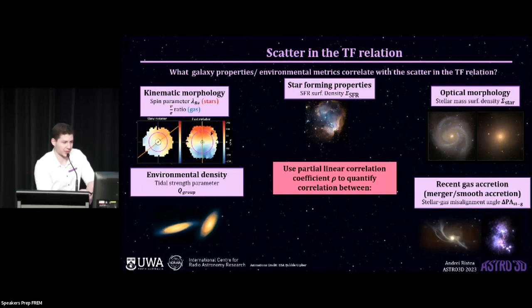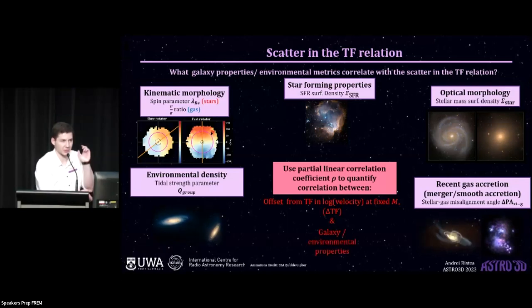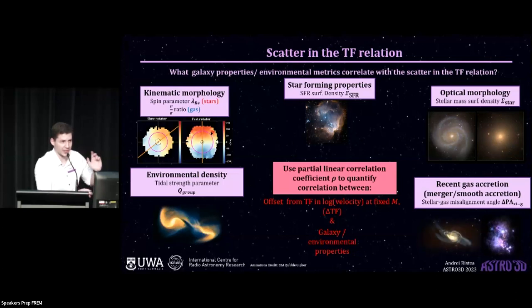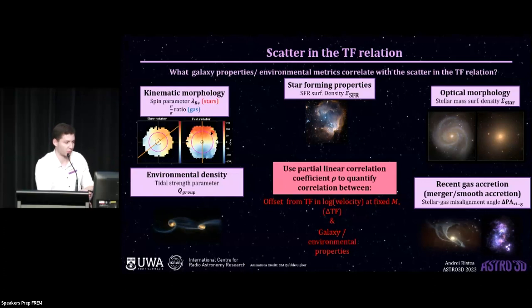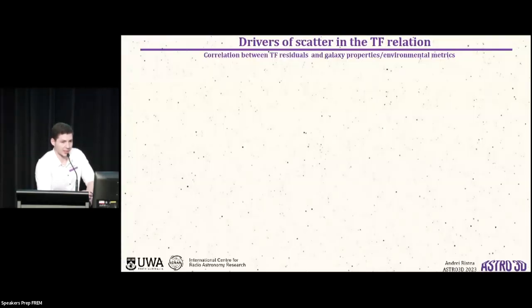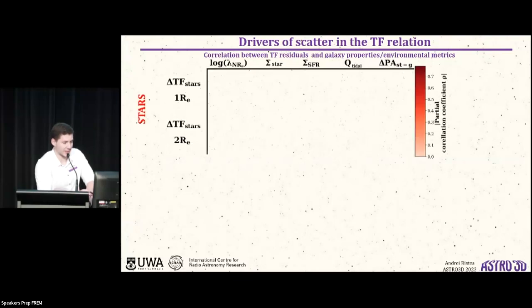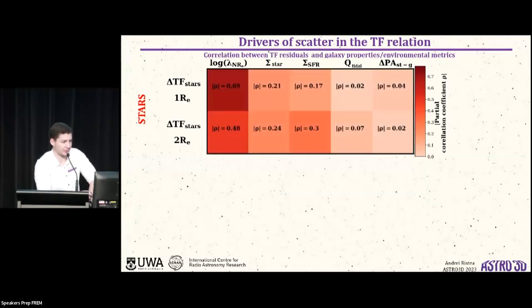Now, for that, I use a partial linear correlation coefficient between the Tully-Fisher residuals in the velocity direction and all of these parameters that I've mentioned. And I should say that this correlation coefficient is taking into account covariances with stellar mass and with all the other parameters when one single correlation is considered. So now we can go ahead and finally see the results of this. And I'll start with the results for stars. And I'll show this in the shape of a grid plot where each cell is color-coded by the correlation coefficient between the Tully-Fisher residuals at 1RE and 2RE and the respective parameter on the top axis. This is what the results are for the stars. And we see that the darker colors or the stronger correlations are with lambda RE or with kinematic morphology, but we don't really see much of a correlation with anything else, just some tentative shallow correlations with stellar mass and star formation rate surface density, not much with environment or kinematic misalignments.